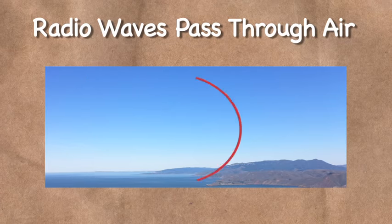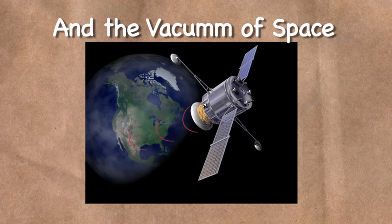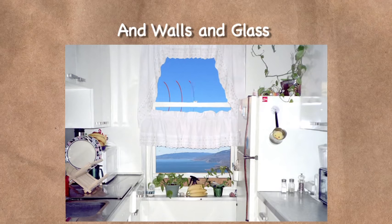RF can travel through many environments, such as air, the vacuum of space, walls. They just don't travel well through very dense materials, such as concrete, water, dirt, or metal.